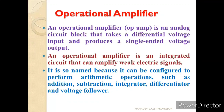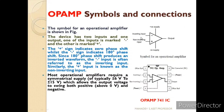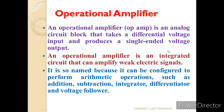First, let us understand about the Operational Amplifier. An operational amplifier is an analog circuit block that takes a differential voltage input and produces a single-ended output. As we can see in the figure, we have two differential inputs and one output. An operational amplifier is an integrated circuit that can amplify weak electric signals. The main application of this amplifier is to amplify the weak signal to a larger signal in order to transmit it over a far distance.